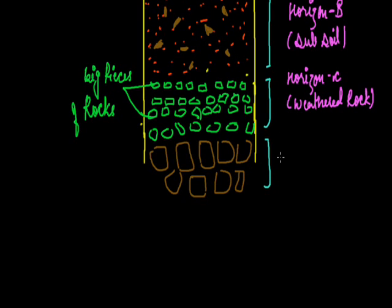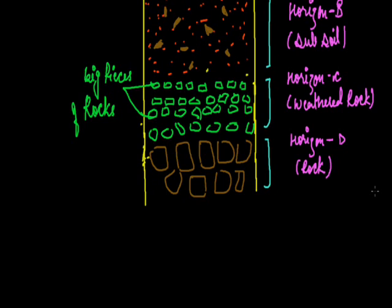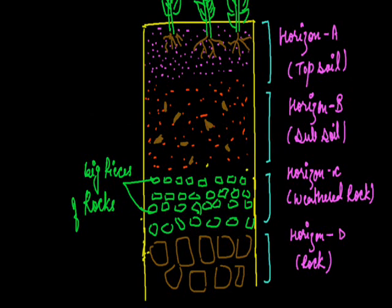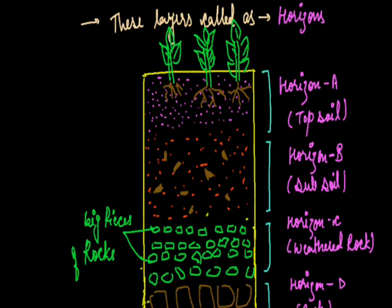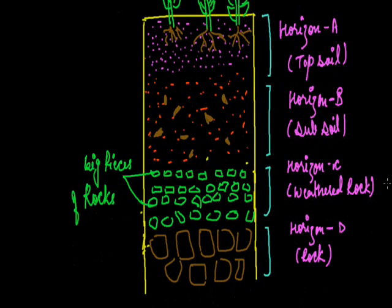The last part of the soil profile is Horizon D, which contains big unweathered rocks — it is the unweathered part of the soil profile. So in summary, the soil profile has four horizons: Horizon A (topsoil), Horizon B (subsoil), Horizon C (weathered rocks), and Horizon D (unweathered bedrock). In the next class we will study types of soil.